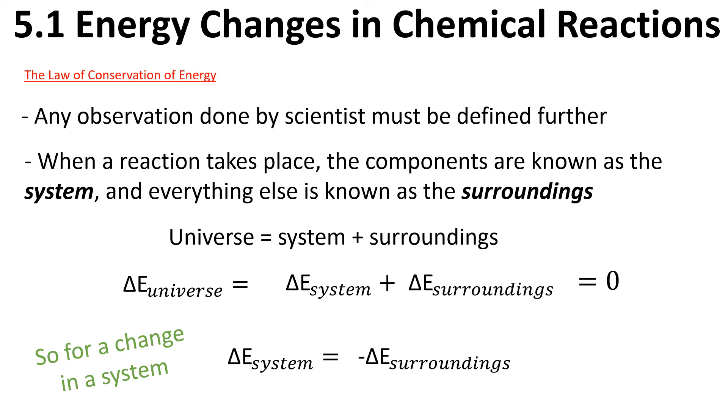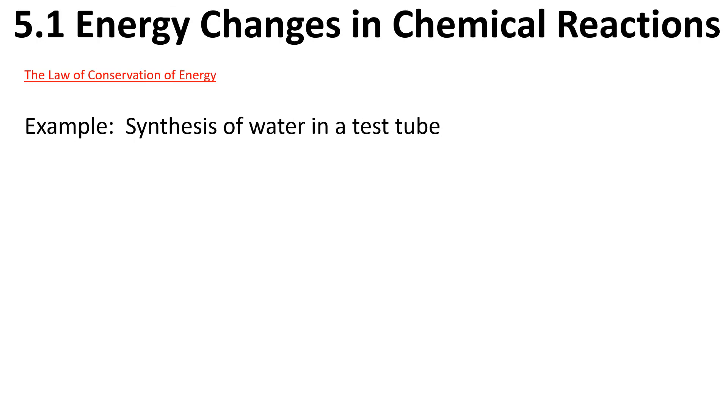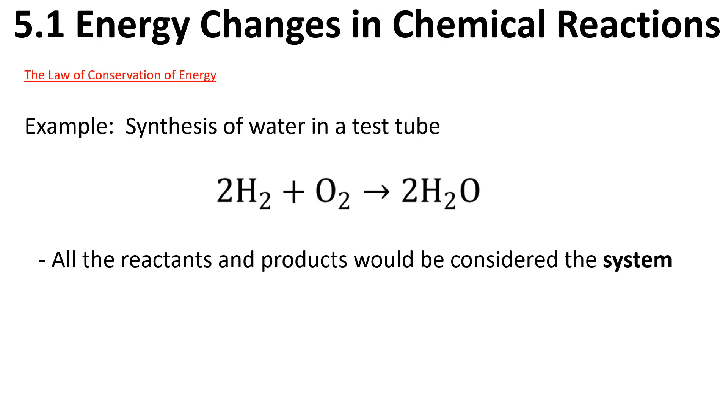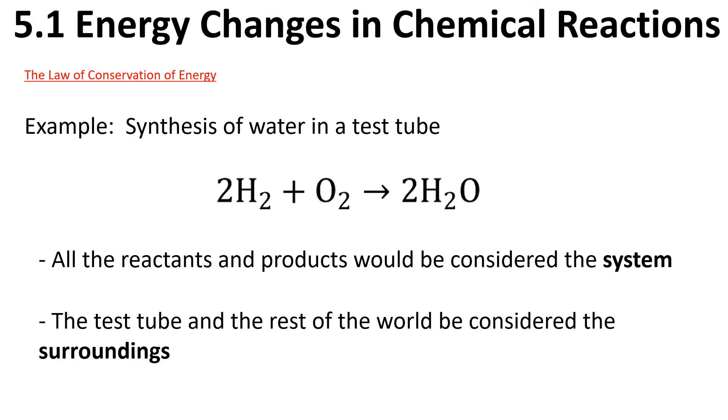Let's look at the synthesis of water in a test tube. Water is being created from its elements, so all of our reactants and products would be considered the system. The hydrogen, oxygen, and water would be our system, and the test tube and the rest of the world would be considered the surroundings.